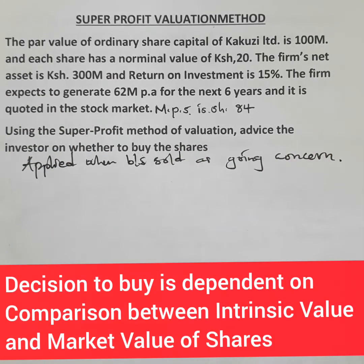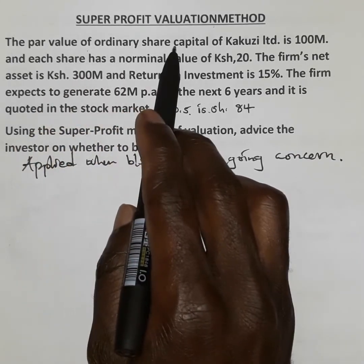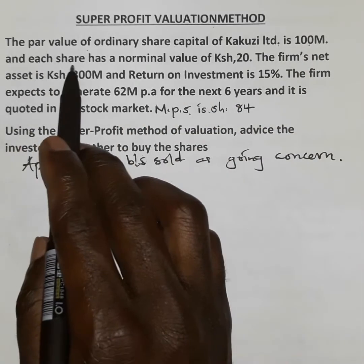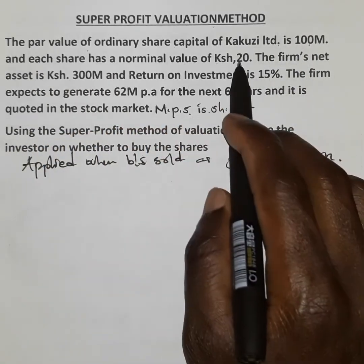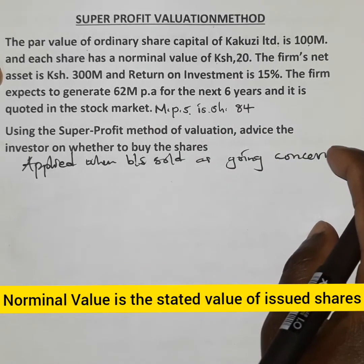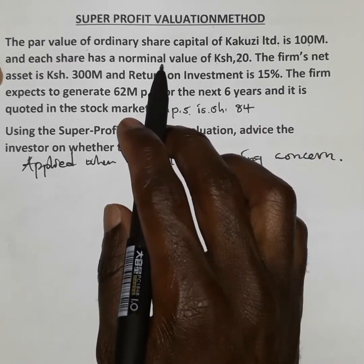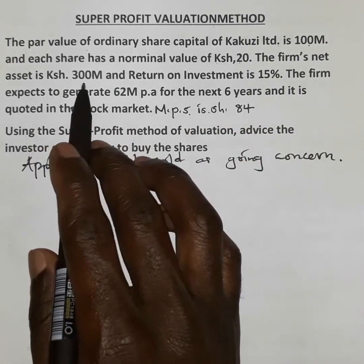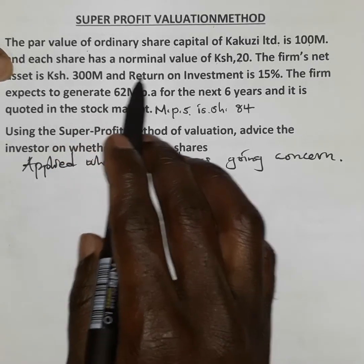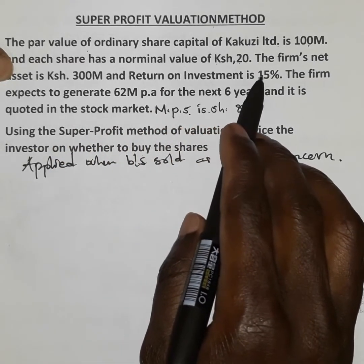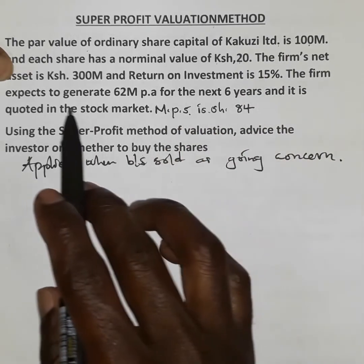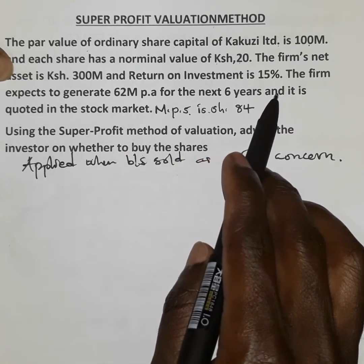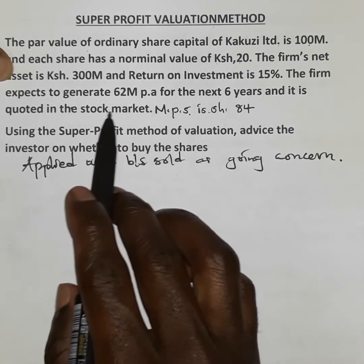This is the question. The par value of ordinary share capital of Kakuzi Limited is 100 million, and each share has a nominal value of 20. Nominal value refers to the maturity value. The firm's net asset is 300 million, and return on investment is 15%. The firm expects to generate 62 million per annum for the next six years, and it is quoted in the stock market.